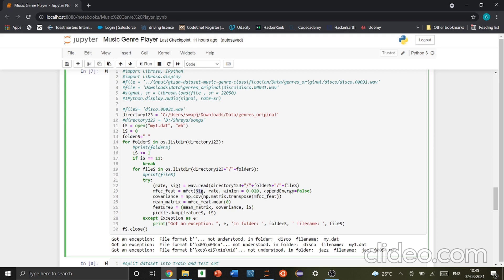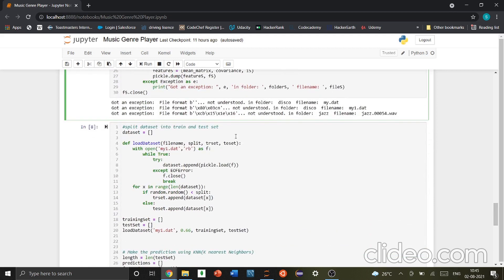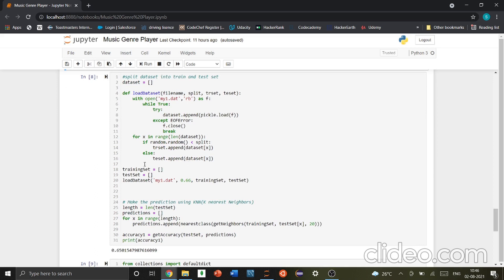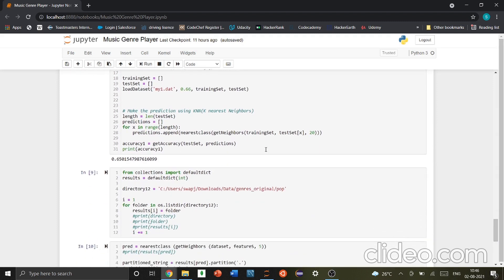Here, you can see it takes the signal, it takes the rate, it takes the length, and the append energy. This function was explained before. We kept some print statements to make sure that it is actually reading all the files. You can see here that it couldn't understand jazz file 54th audio file. That is just one exception that we kept. Again, like I mentioned here, we've split the data set into training and test set. This is that function. Then, we make the prediction using KNN algorithm. Here, you can see that we use the get accuracy and get neighbors functions.